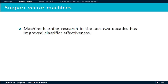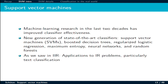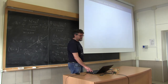The effectiveness of classifiers has improved a lot over the years. Nowadays everybody is talking about deep learning or reinforcement learning. In general, there are a lot of new generation state-of-the-art classifiers such as support vector machine, decision trees, regularized logistic regression, and a number of alternatives. In terms of information retrieval, we are interested in these classification algorithms.